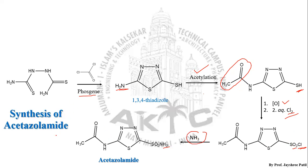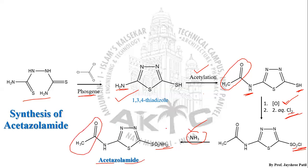In this way, Acetazolamide is synthesized. To summarize: the hydrazine derivative treated with phosgene gives the main scaffold — 1,3,4-thiadiazole — which on acylation gets an acetyl group on the amino substituent. This acylated moiety undergoes oxidation with chlorine to form a sulfonyl chloride derivative, which is then acted upon by ammonia to give the sulfonamide. That sulfonamide, together with the acetyl group and the 1,3,4-thiadiazole scaffold, makes up the structure of Acetazolamide.